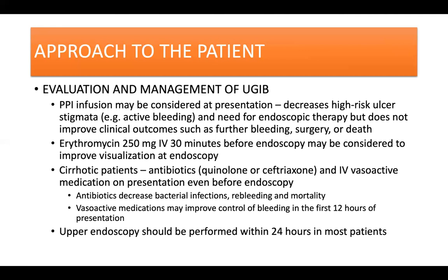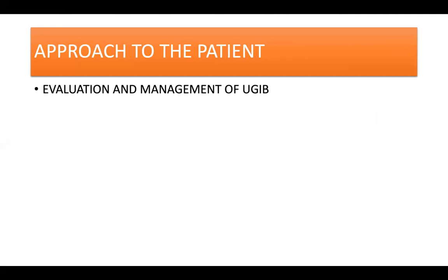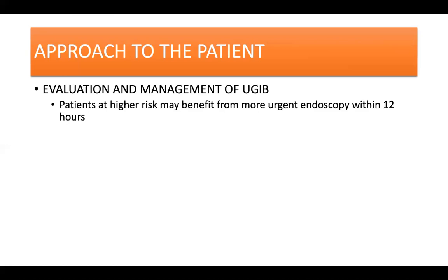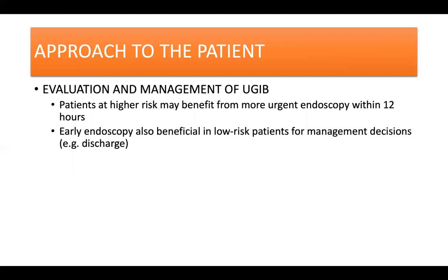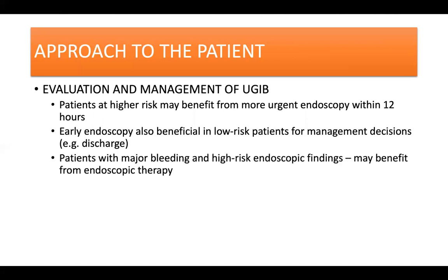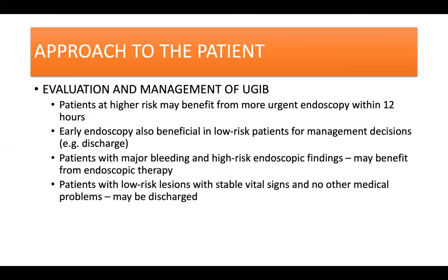Upper endoscopy should be performed within 24 hours in most patients with upper GI bleeding. Patients at higher risk, such as those with hemodynamic instability or cirrhosis, may benefit from urgent endoscopy within the first 12 hours. Early endoscopy is also beneficial in low-risk patients for management decisions such as planning for discharge. Patients with major bleeding and high-risk endoscopy findings such as varices or ulcers with active bleeding or a visible vessel may benefit from endoscopic hemostatic therapy, whereas patients with low-risk lesions such as clean-based ulcers, erosions, or non-bleeding Mallory-Weiss tears who have stable vital signs and hemoglobin and no other medical problems may be discharged.